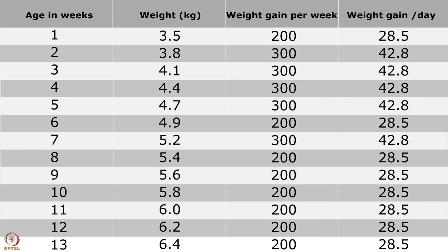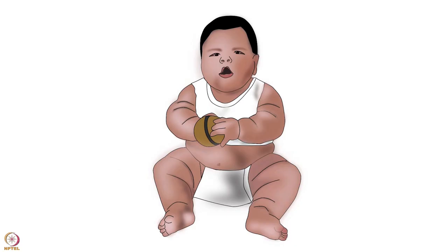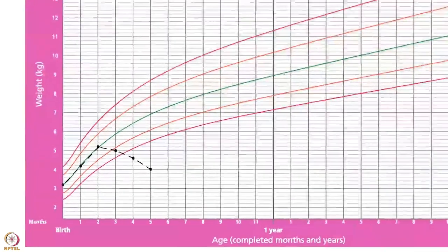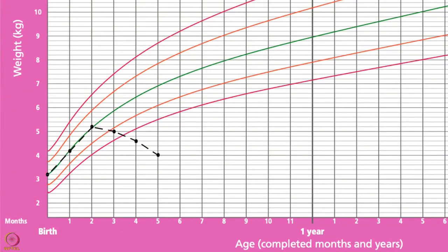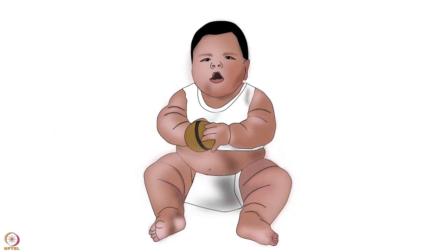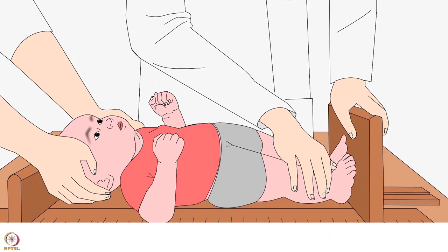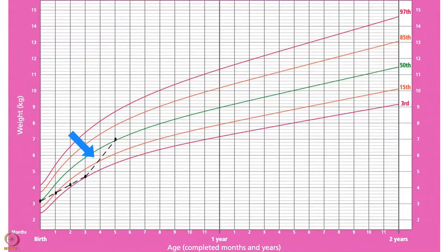When interpreting growth charts, be alert for situations that suggest risk. A sharp decline in the growth line of a child indicates a growth problem. Even if a child is overweight, he should not have a sharp decline in his growth, as losing too much weight rapidly is not healthy. The overweight child should maintain his weight while increasing in length. On the other hand, a rapid incline in the growth line is sometimes healthy.